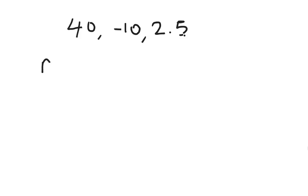Exactly. R will always, if you divide the second term, U2, by U1, you can figure out what the R is. So in this case it's negative 10 over 40. And what does that give you?